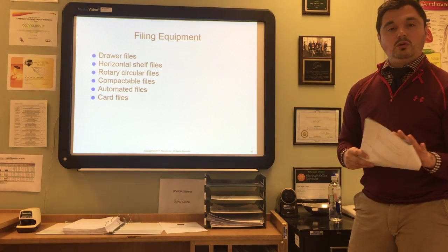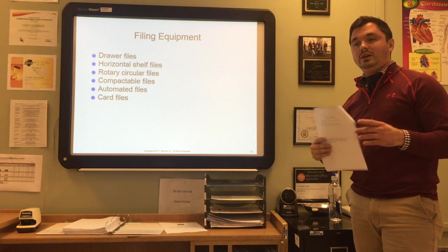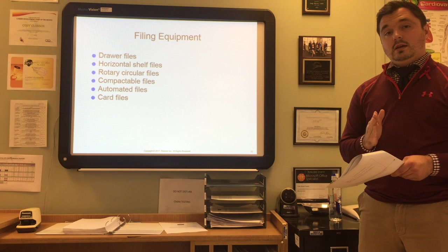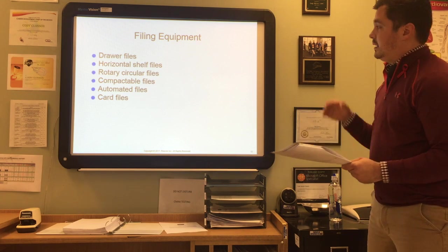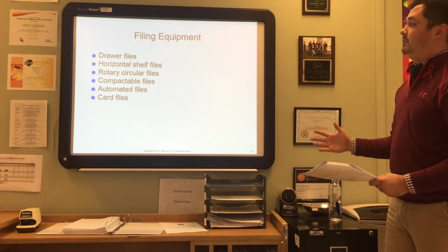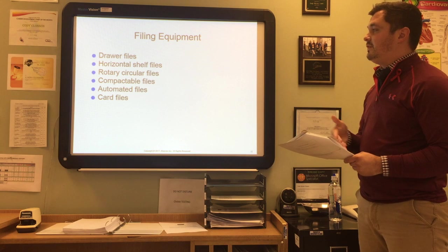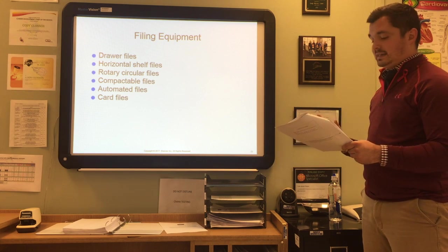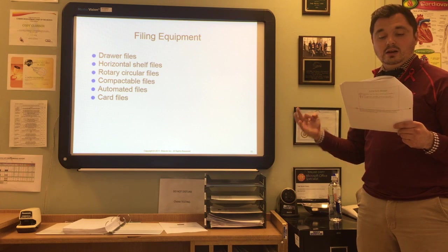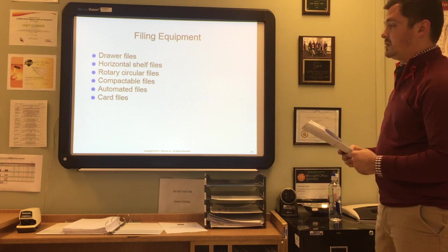Now let's talk about filing equipment. The most popular system today is color coding on open shelves. Some of the equipment types you might use include drawer files, horizontal shelf files, rotary circular files, compactable files, automated files, or card files. Factors to consider when selecting filing equipment include office space availability, structural considerations, cost, size and volume of records, confidentiality requirements, retrieval time, and fire protection.